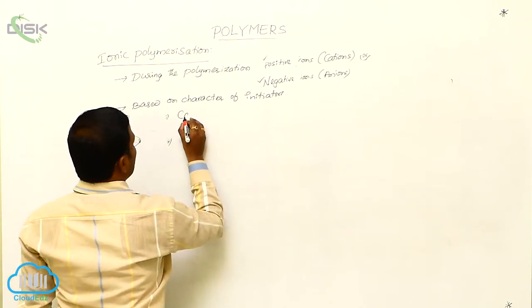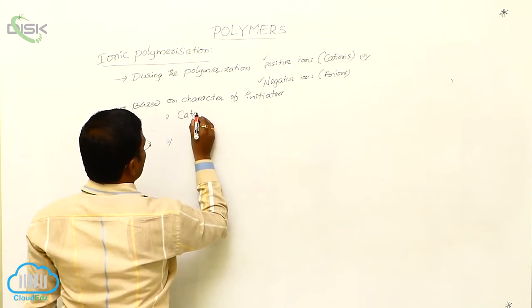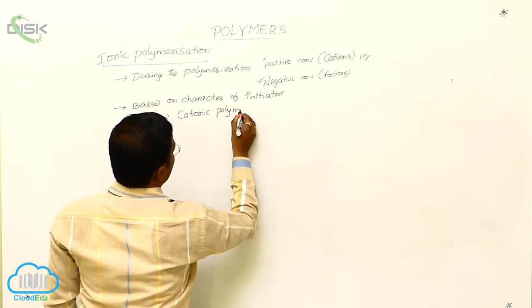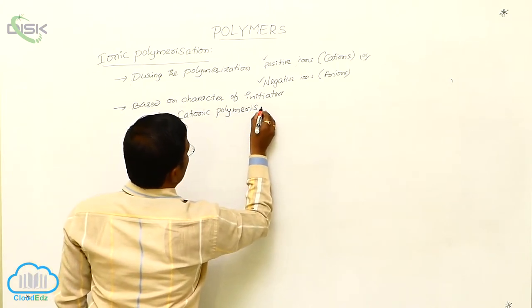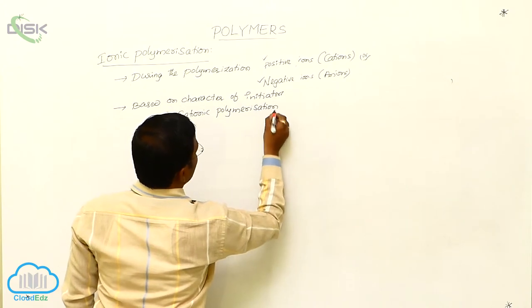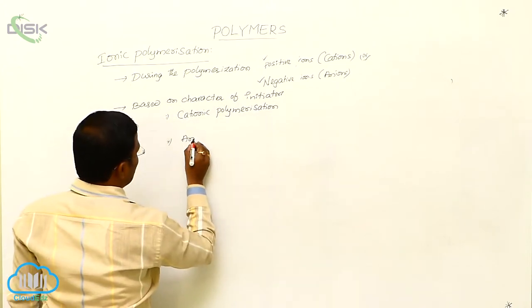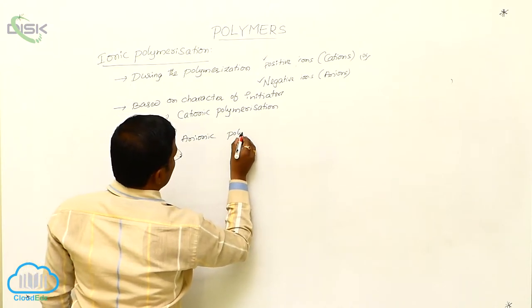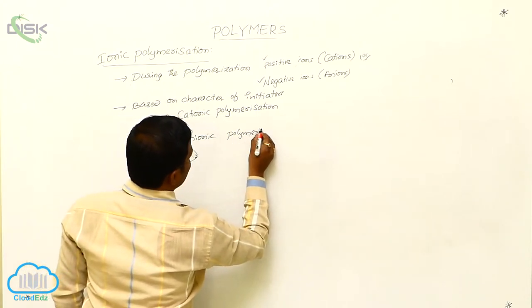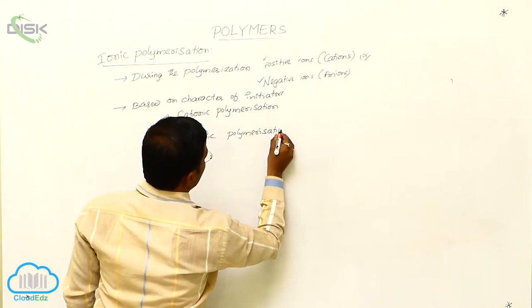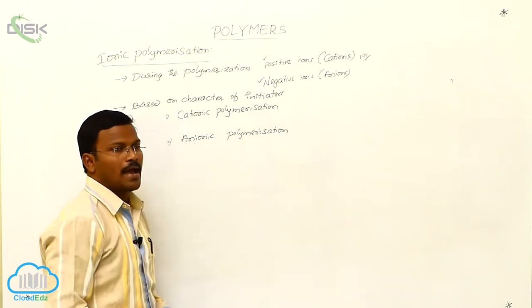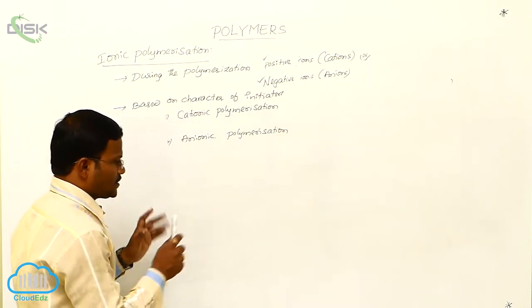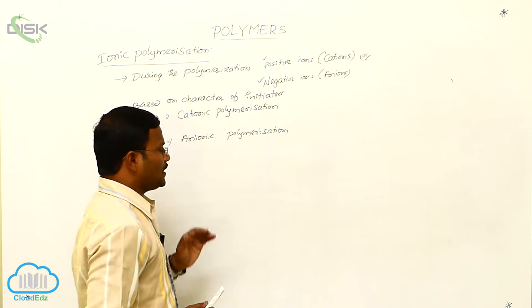The two types are: one is cationic polymerization, and the second type is anionic polymerization. Never get confused — the two types of ionic polymerization reactions are cationic polymerization and anionic polymerization.